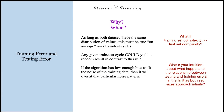A take-home question: what do you think is the relationship between test set and training set error in the limit as both set sizes approach infinity? As your training and test sets get bigger and bigger, what happens to the relationship between testing and training set error? I'll let you work it out or discuss it on Piazza or in discussion section.